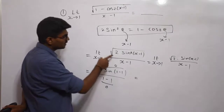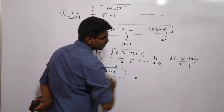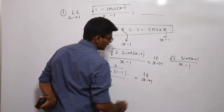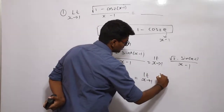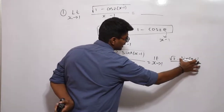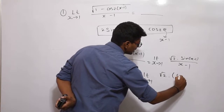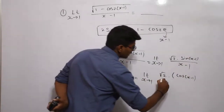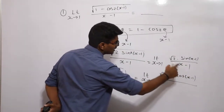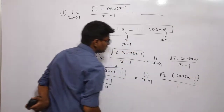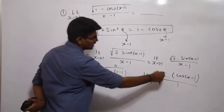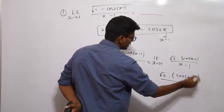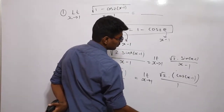Since we have an indeterminate form, the next step is to differentiate the numerator and the denominator separately — that is L'Hôpital's rule. Differentiating the numerator: root 2 times differentiation of sin gives cos(x minus 1), and differentiating x minus 1 gives 1. The denominator differentiates to 1. Substituting x equals 1: cos(1 minus 1) equals cos 0 which equals 1.